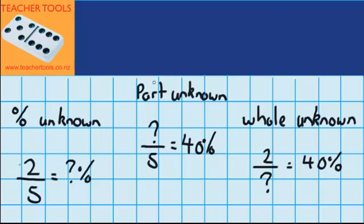The second one is called part unknown. So let's imagine you got 40% of the questions correct. The test was out of five. We want to know how many answers you got correct. And the third one is whole unknown where you got 40% of the questions correct. You did that by getting two questions right. So how many questions must there have been in the test?